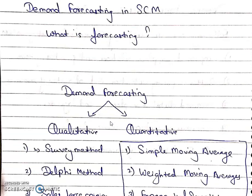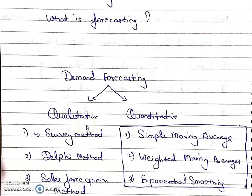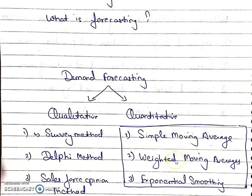Demand forecasting is divided into two categories. First one is qualitative, second one is quantitative. In qualitative, there are several methods: survey method, Delphi method, sales force, and opinion method. In this qualitative method, there is no numeric data available and the calculation is based on human judgment.